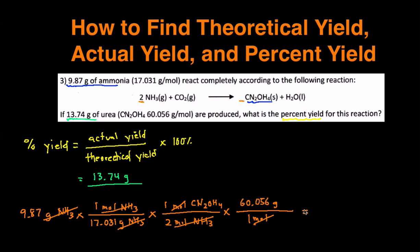And then we're left with the answer 17.4 grams of urea. So that's going to be my theoretical yield.